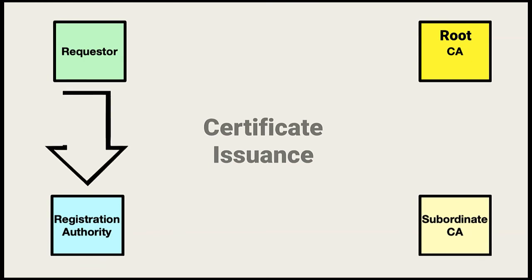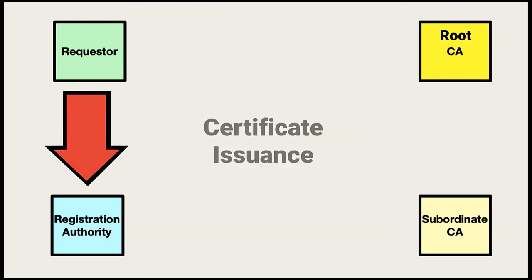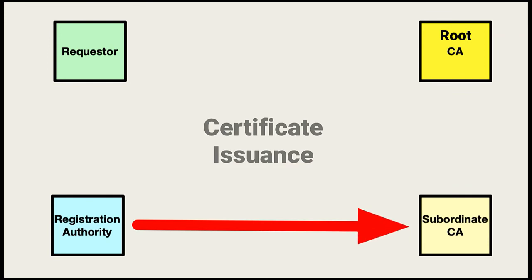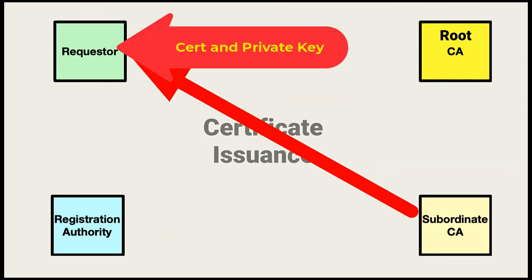A person or organization sends a certificate request to a registration authority. The request content depends on how the CA verifies the requester's identity. Identity verification is critical for ensuring the certificate is issued to someone or something claiming a specific identity. Once the registration authority verifies the requester's identity, it issues the requester's certificate that contains the requester's public key. The requester is also issued a private key. If the key pair is generated on the requester's system, it is secured immediately after. If the private key is generated at the CA site, the private key must be securely sent to the requester.